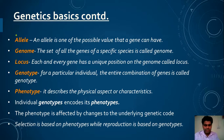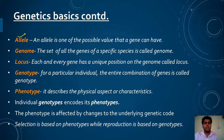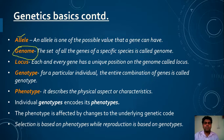Now let's talk about important terminology. An allele is one of the possible values that a gene can have — a gene represents a property, and its particular possible value is called an allele. The set of all genes of a specific species is called the genome. For each and every gene, there is a unique position on the genome called the locus. For a particular individual, the entire combination of genes is called the genotype.